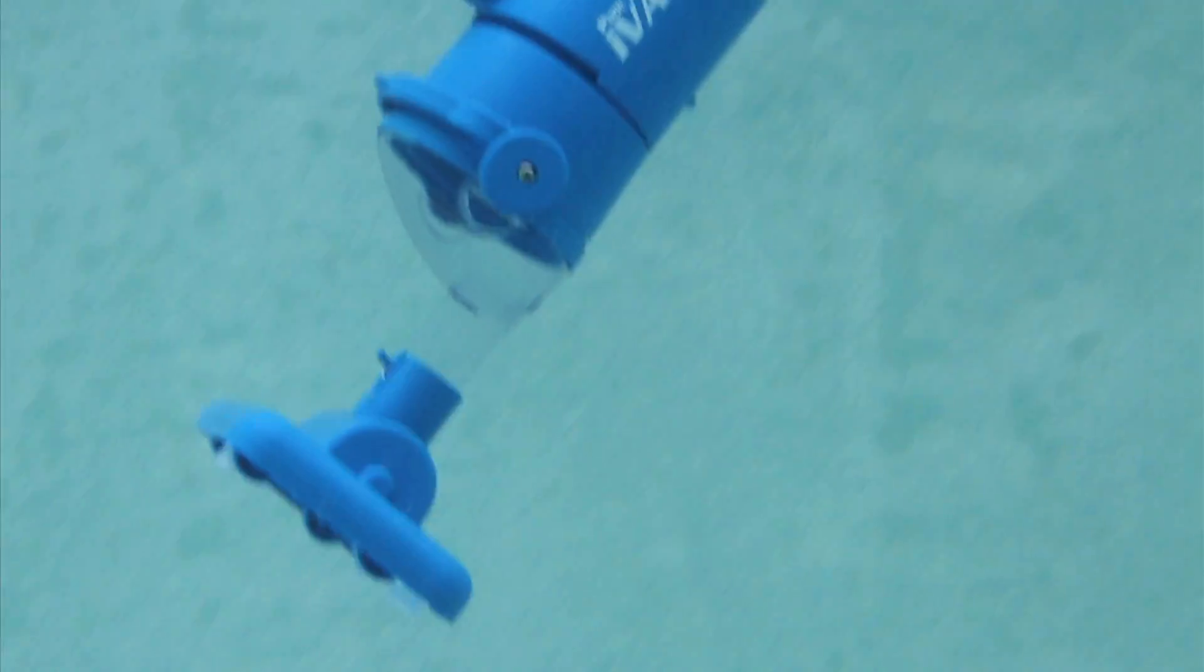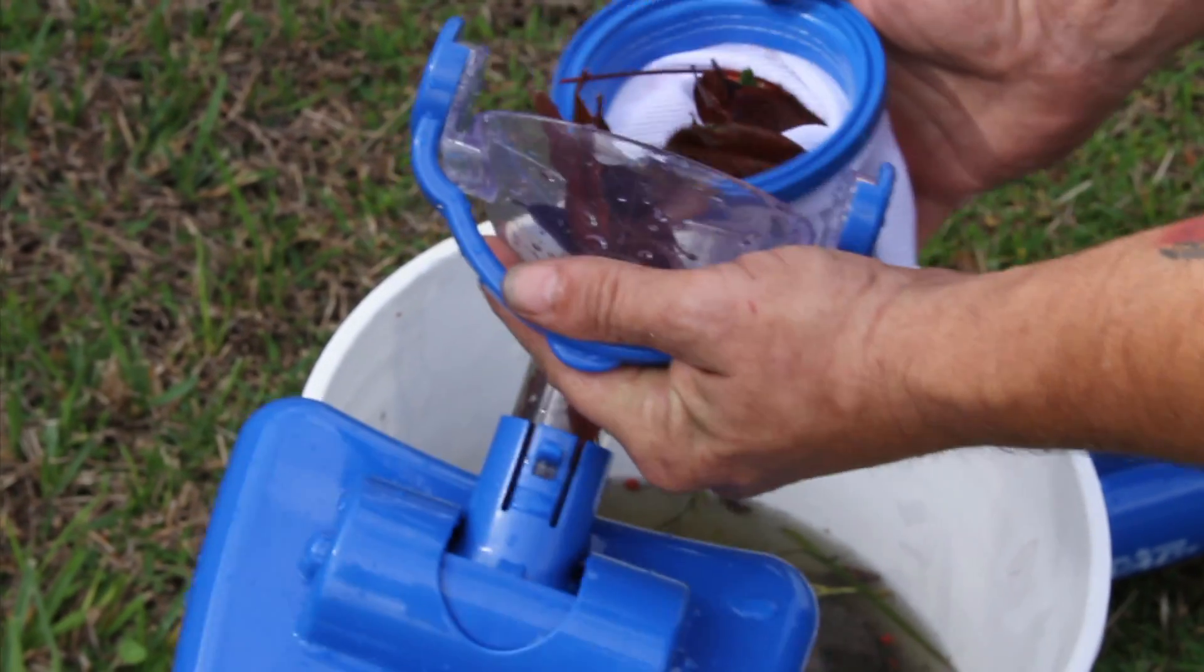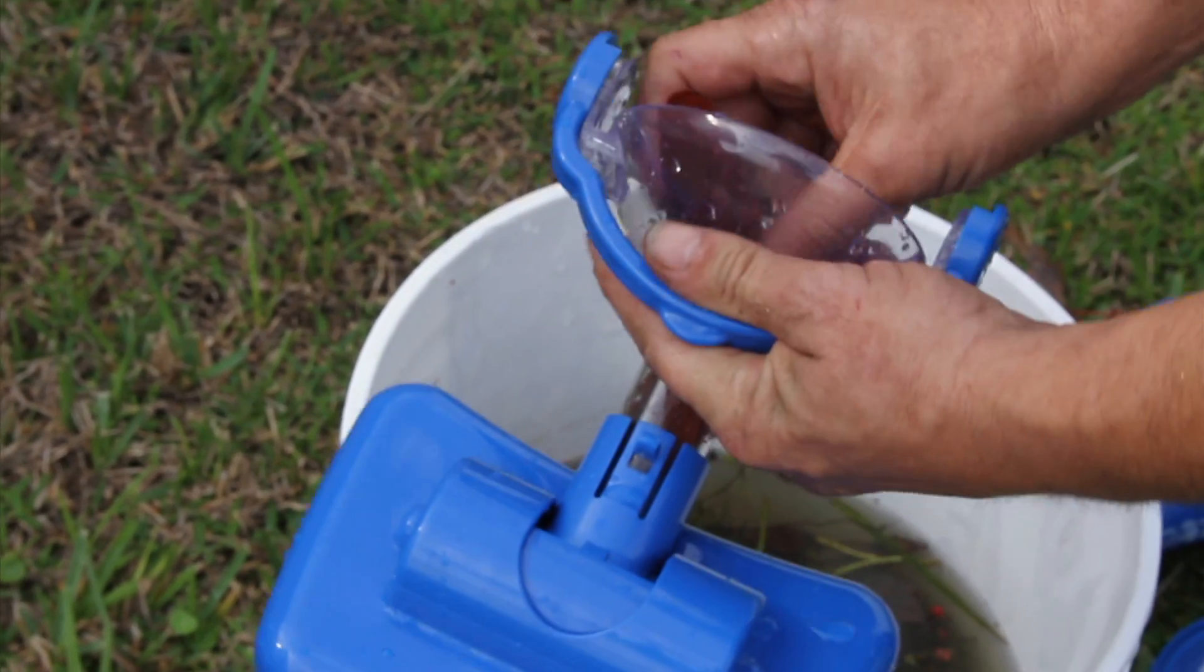To clean the extreme multi-layered filter bag, open the handle on the debris chamber and remove the filter and nose cone. Empty the bag and rinse clean with a garden hose.